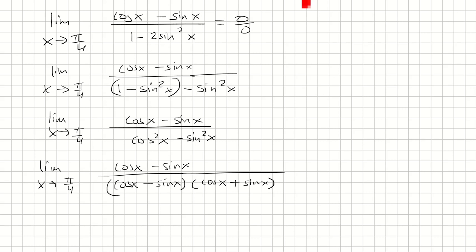Now, cos x - sin x cancels. I plug in π/4. I have 1 at the top, and cos(π/4) and sin(π/4) are both √2/2.